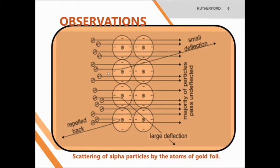According to his observations on the scattering of alpha particles by the atoms of the gold foil, he observed that the majority of alpha particles passed through the foil undeflected. About 1 in 1 million showed deflection — either small deflection or larger deflection greater than 90 degrees. A few of them bounced back.